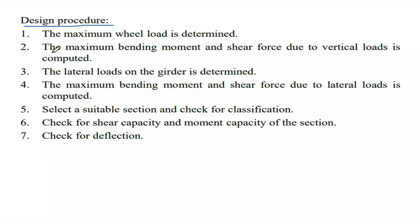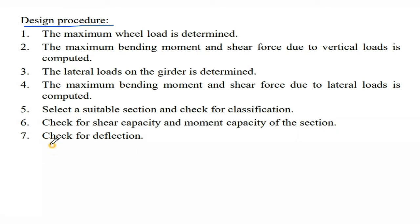Step 1: Determine the maximum wheel load. Step 2: Determine the maximum bending moment and shear force due to vertical load. Step 3: Determine the lateral loads on the gantry girder. Step 4: Determine the maximum bending moment and shear force due to lateral load. Step 5: Select a suitable section and check for classification. Step 6: Check for shear capacity and moment capacity of the section. Step 7: Check for deflection.